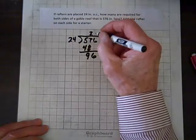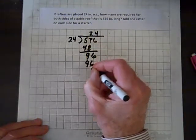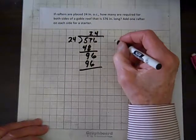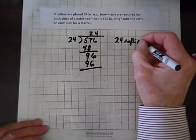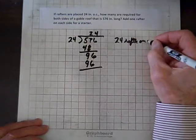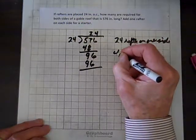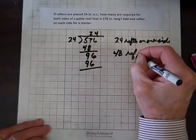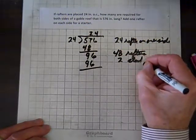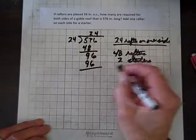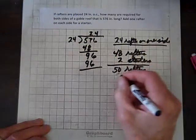And let's see. What times 24 is as close as we're going to get to 96? Well, I would say 4 is. And 4 times 24 is 96. And, hey, we've got it made here. So, that's going to be 24 rafters on one side. So, that's going to be... To cover both sides, we need 48 rafters. Plus, we need 2 starters. So, that's going to add up to 50 rafters altogether. And we got her.